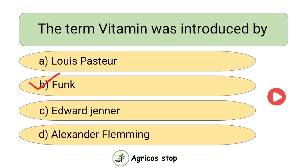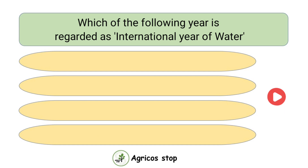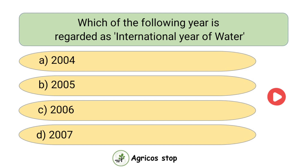The term 'Vitamin' was introduced by — options are Louis Pasteur, Funk, Edward Jenner, and Alexander Fleming. The answer is Funk. The term Vitamin was introduced by Funk.